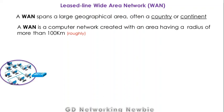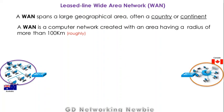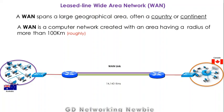For instance, there is an organization which has an office in Australia and the same organization has an office in Canada. Now if that organization wants to connect these two offices, which are actually 14,000 kilometers away from each other, one option is that this office purchases all the infrastructure — all the cables — and installs that cable from Australia to Canada.